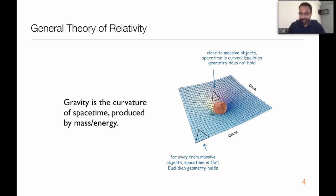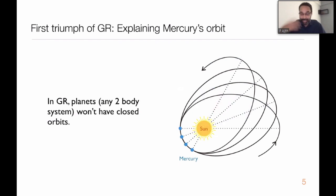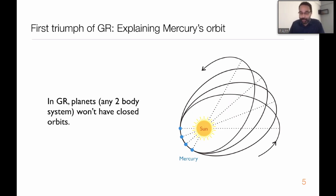It sounds very exotic, because you invoke ideas of completely unimaginable things like space-time and curved space-time. But the really important thing about any theory of modern physics is that it has to make testable predictions which one could verify using experiments and observations. Einstein had a set of data that needed an explanation even before he constructed the theory - the orbit of the innermost planet of the solar system, Mercury.